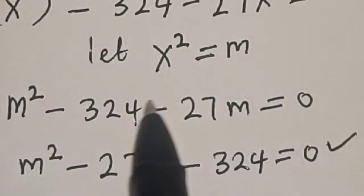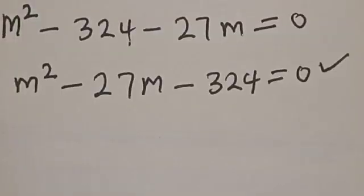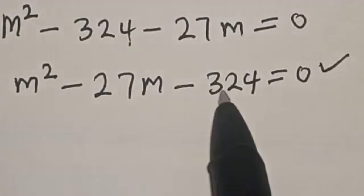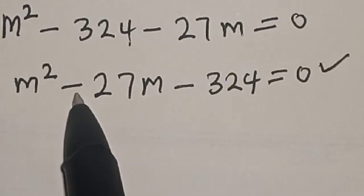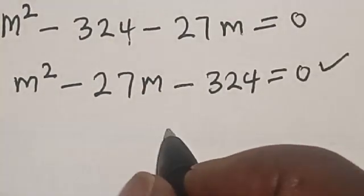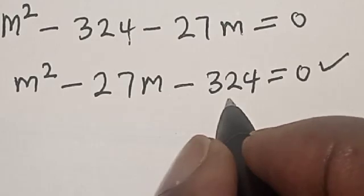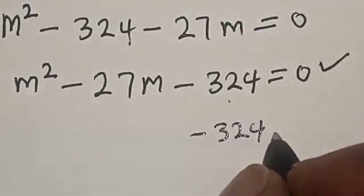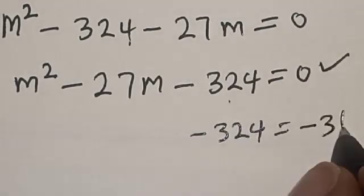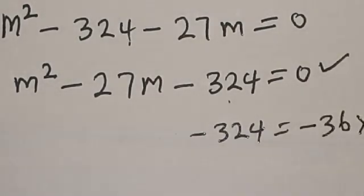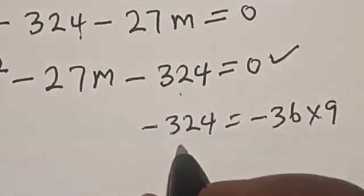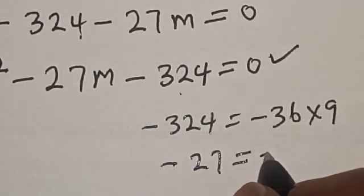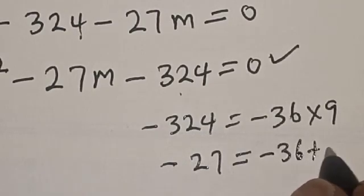In this case, I'm going to use the factorization method. We look for two numbers such that their product gives minus 324 and their sum gives minus 27. Minus 324 equals minus 36 multiplied by 9, and minus 27 equals minus 36 plus 9.